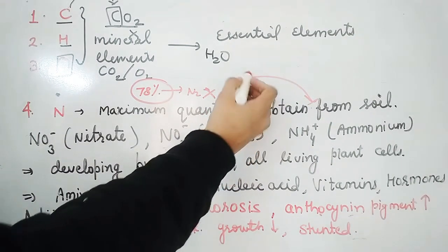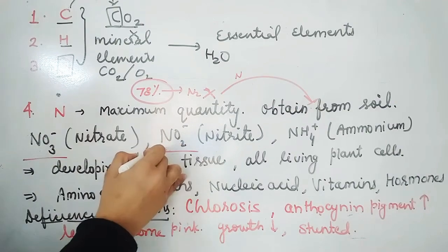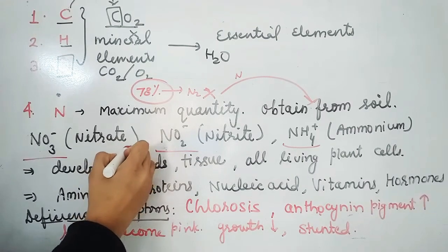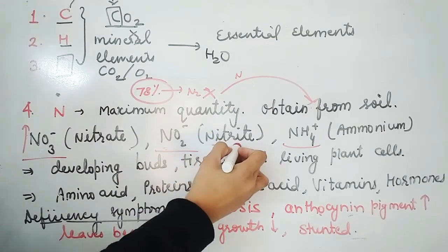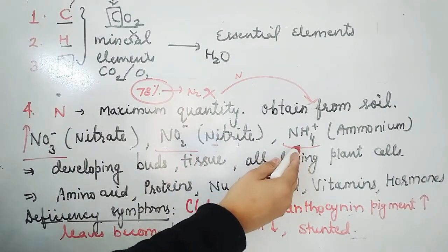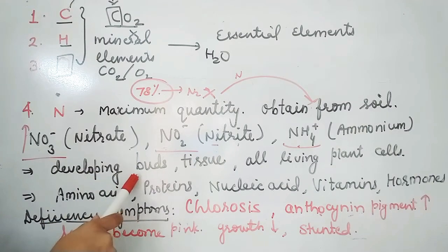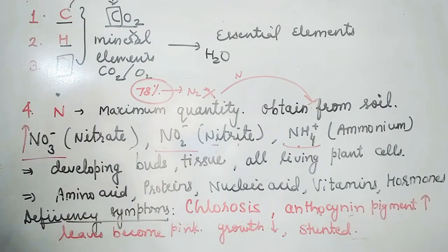Plants absorb nitrogen in the form of nitrogenous compounds — specifically nitrate, nitrite, and ammonium forms. The highest absorbed form is nitrate and the least is ammonium. Nitrogen is present in all living cells, and the maximum amount is found in meristematic tissues and actively dividing parts of the plant.